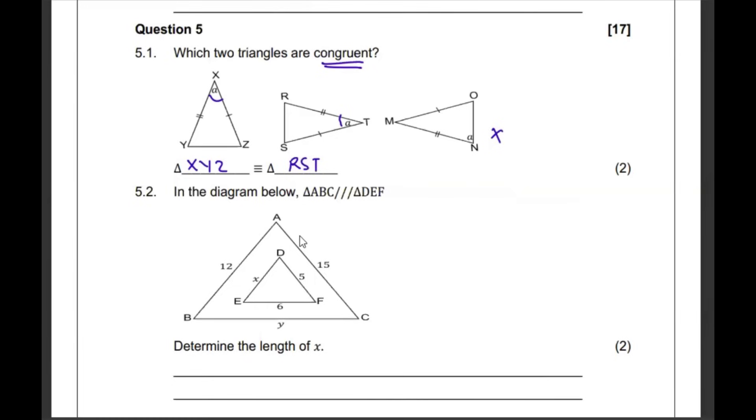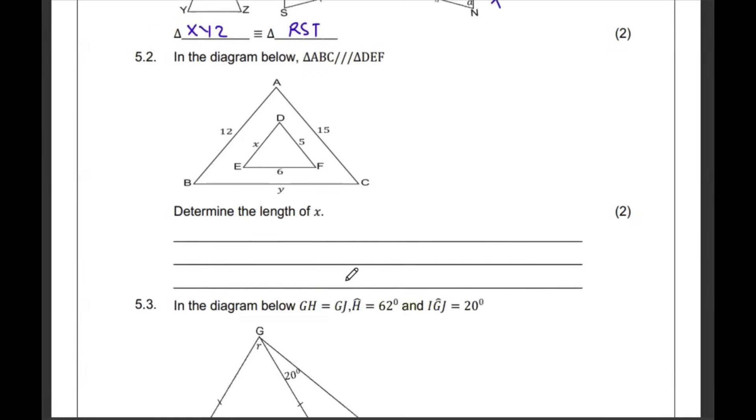Then 5.2 in the diagram below, this triangle is similar to that triangle. They want us to find the length of X. So, when triangles are similar, the sides will be in proportion. Meaning that if I get the 15 divided by 5, it should be able to get the same thing as Y divided by 6. So, 15 by 5 is 3, meaning that it is Y over 6 multiplied by 6, meaning that our Y is 18.